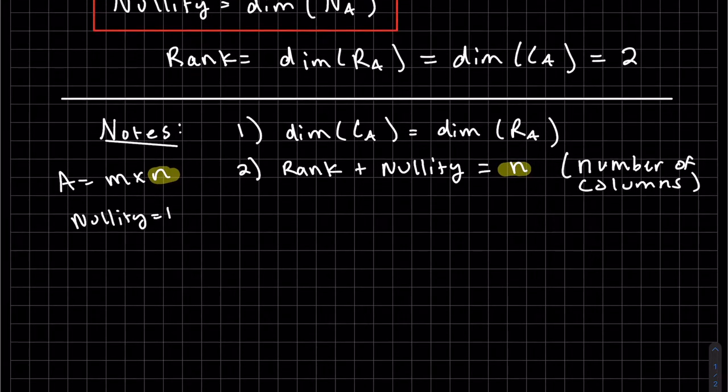my nullity is one, my rank was two, you add them up. We got three and A is a two by three. They're the same.